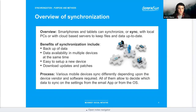Overview of synchronization: Smartphones and tablets can synchronize with local PCs or with cloud-based servers to keep files and data up to date. Benefits of synchronization include backup of data, data availability across multiple devices at the same time, easy setup of a new device, and downloading updates and patches. Various mobile devices sync differently depending on the device vendor and software required, but all allow you to decide which data to sync from the email app or the OS settings.